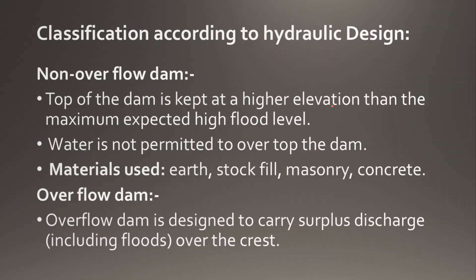Classification according to hydraulic design has two types: non-overflow dam and overflow dam. Consider a dam with a height of 150 meters. When we release water at around 110–140 meters, the height decreases. If excess water is present, overflow will occur, similar to what we see in a concrete lab where excess water immediately flows over.